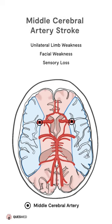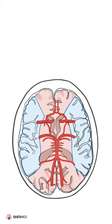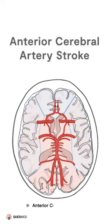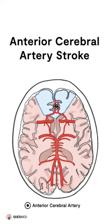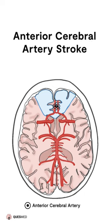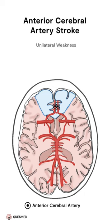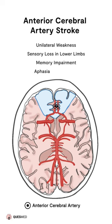A less common type of stroke is an anterior cerebral artery stroke. This can cause unilateral weakness or sensory loss primarily in the lower limbs, as well as memory impairment, aphasia, and apraxia.